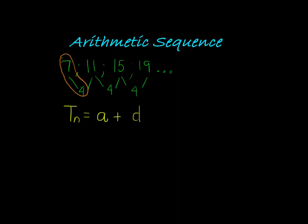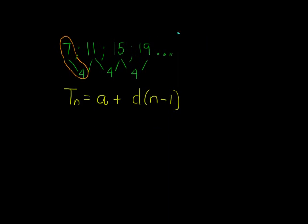But for the first term, I don't add it, only from the second term. So that's why I added n times, but if n is 1, I haven't added it yet, so I only start adding from the second term. That's why it looks more or less like this.